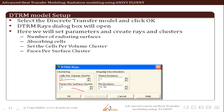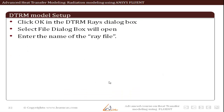We set the cells per volume cluster and faces per surface cluster. We also set the number of theta divisions and phi divisions for angular discretization. This decides the angular discretization and formation of rays, which is the basic assumption of DTRM — that radiation from a certain solid angle region can be approximated by a single ray. Then click OK in the DTRM dialog box. After that, a select dialog box will open where you enter the name of the ray file and decide whether to write a binary file. ANSYS Fluent will then make the ray calculations, write the ray file, and read it afterward.